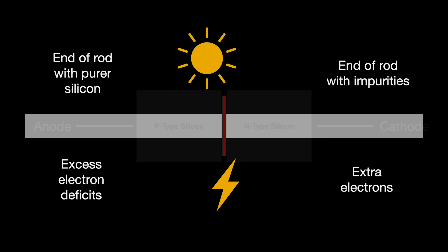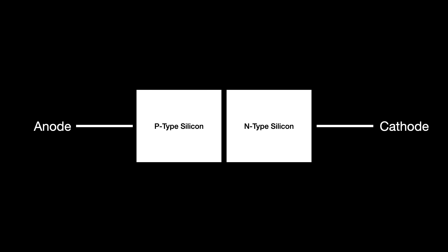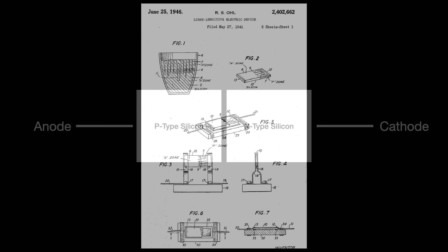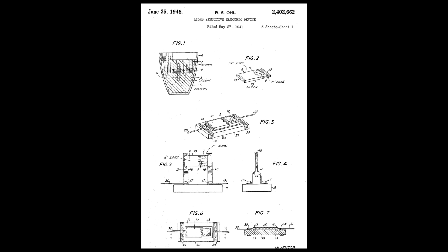What Ohl had discovered was the P-N barrier, now known as the P-N junction. The P-N junction is a fundamental building block of devices like transistors, diodes and photovoltaic cells. In 1946, Ohl filed a US patent for a light-sensitive device. This would be the ancestor for the modern solar cell.